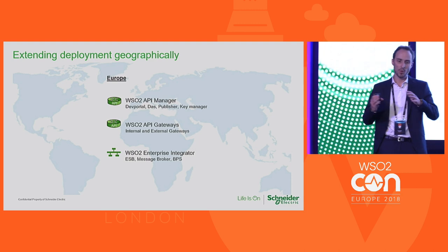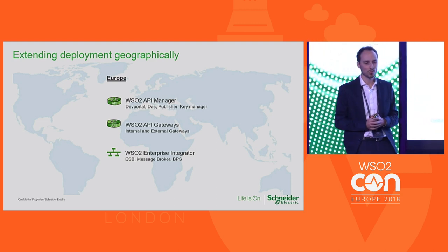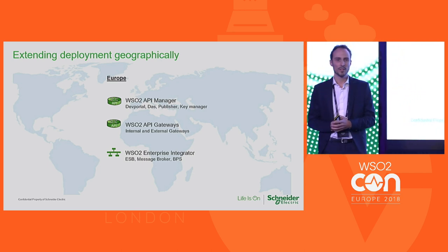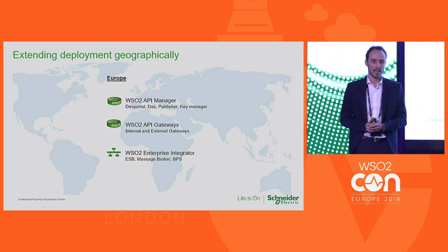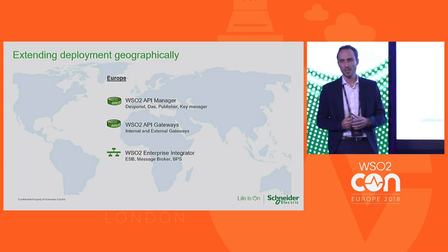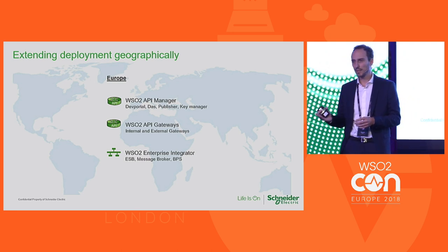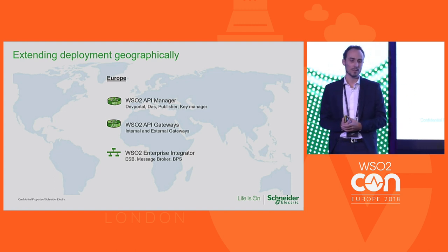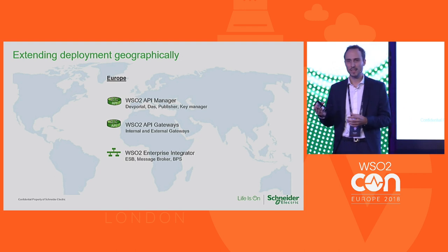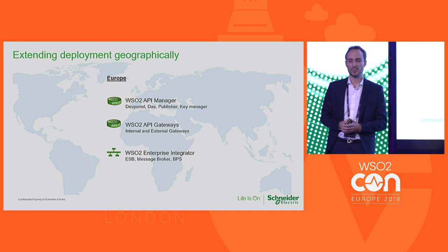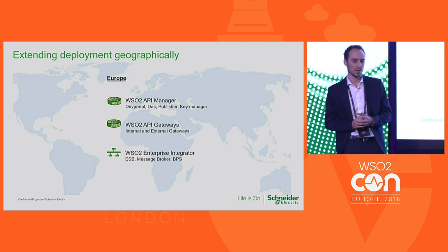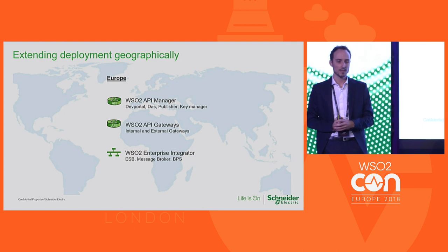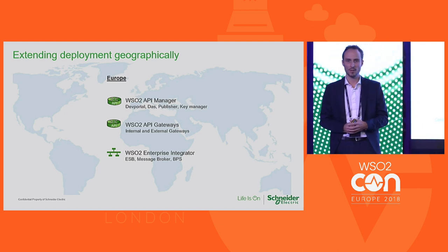Initially, we started deploying our WSO2 tools in Europe in a data center, and then moved to Amazon Web Services Virtual Private Cloud to leverage cloud features — still on our own network. We deployed both the API Manager and Enterprise Integrator there. We have internal gateways for internal network usage and external gateways — a subset of APIs — accessible from public networks on DMZs. All key components are in high availability to ensure proper uptime during maintenance: all gateways, key manager, ESB, and message broker are doubled.